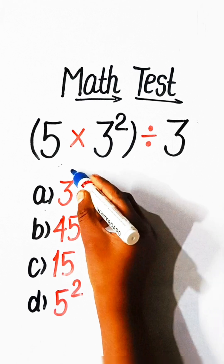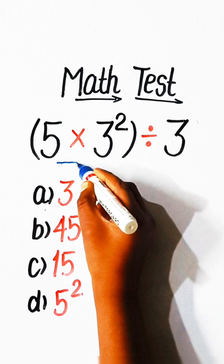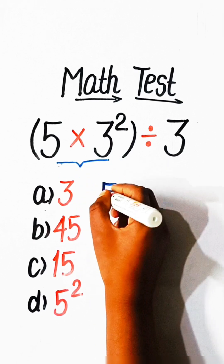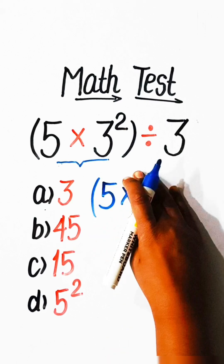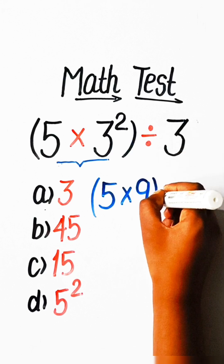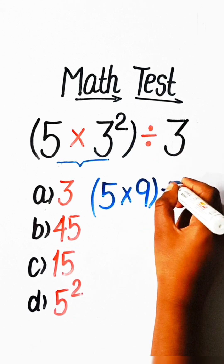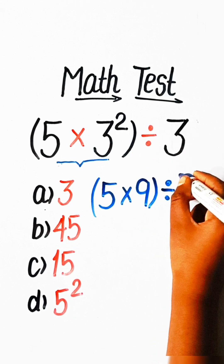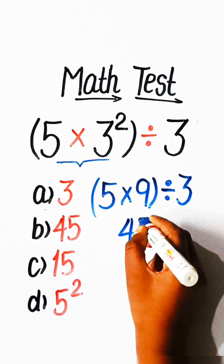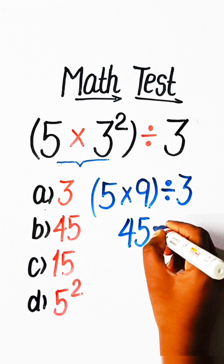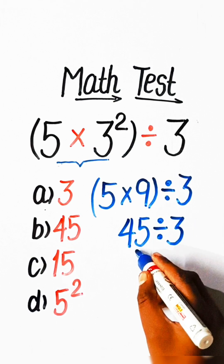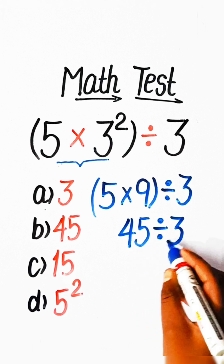So, in order to solve this, we have to solve this bracket part first. We will write here 5 multiplied by 9. 3 squared is 9. Divide by 3. 5 times 9 is 45 divided by 3. 45 divided by 3 is 15.